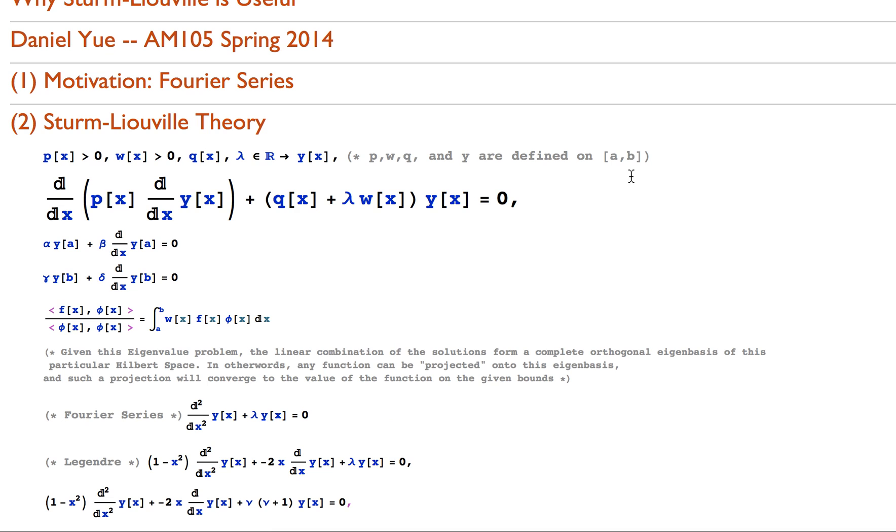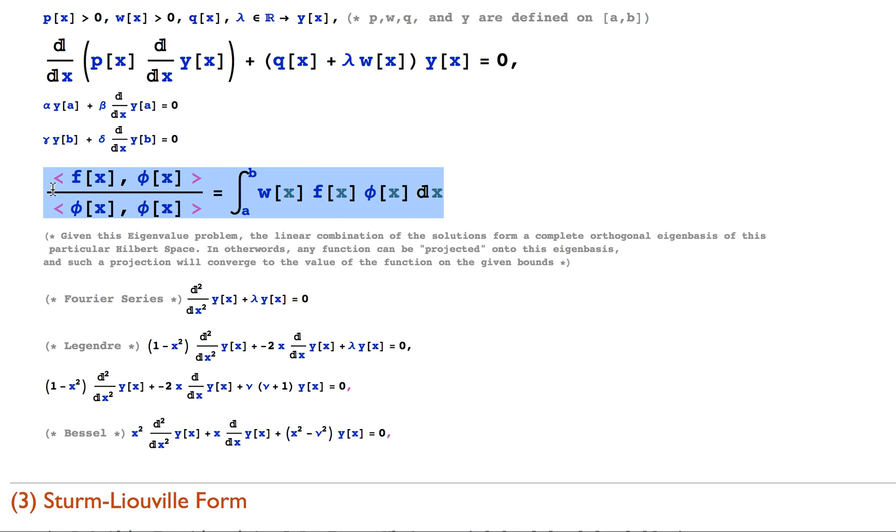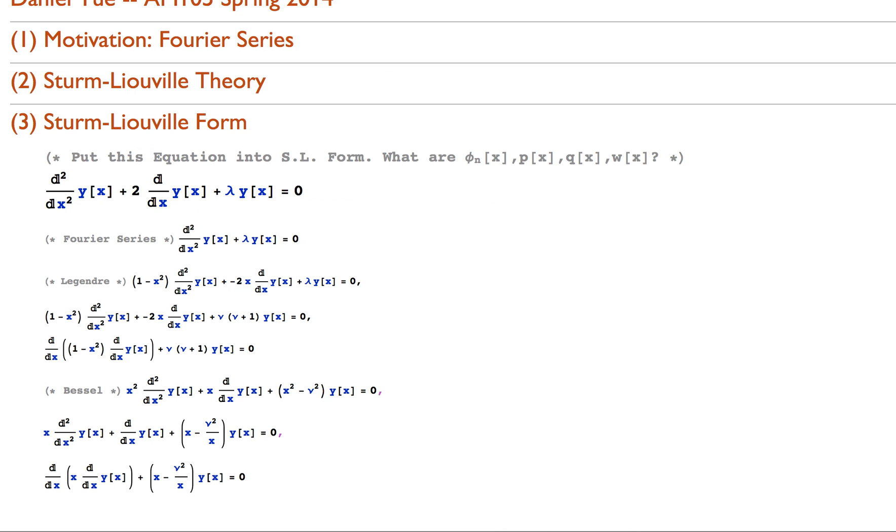This differs from Fourier series, well it doesn't differ from Fourier series, but you can see from Fourier series from before that the weighting function is actually 1, so we just ignore it in this inner product. But in reality, for other functions, such as Legendre and Bessel functions, we're going to need to utilize this weighting function as we do. I'm forgetting the normalizing constant here, but we're going to need some form of weighting function in our inner product.